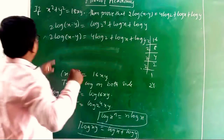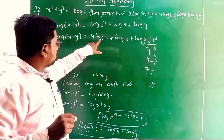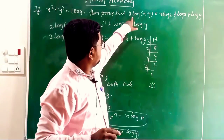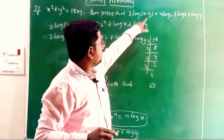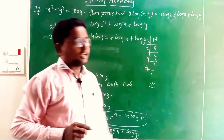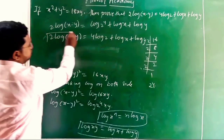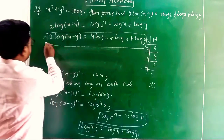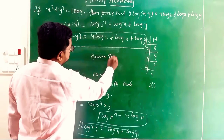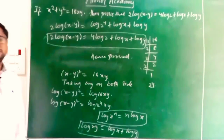Now we can check: our equation 2 log(x − y) = 4 log 2 + log x + log y is verified. We have proved this. Hence proved. Thank you.